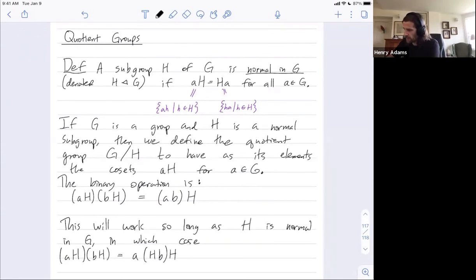And then since H is normal, this right coset HB is the same as the left coset BH. So this I could also write as BH. And then I could use associativity to get this.